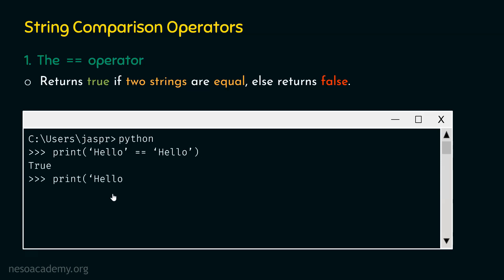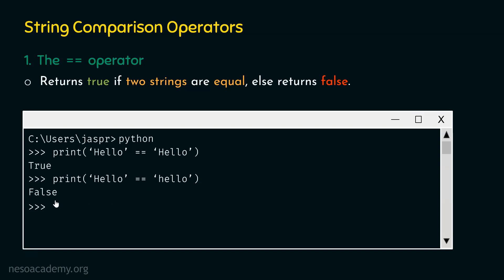Now if we type print('Hello' == 'hello'), we will get false as a result, because comparisons are case sensitive. Capital H is not equal to small h, and this is the reason why the equality operator returns false. Even if a single character is not the same, the two strings are not the same, and we get false.